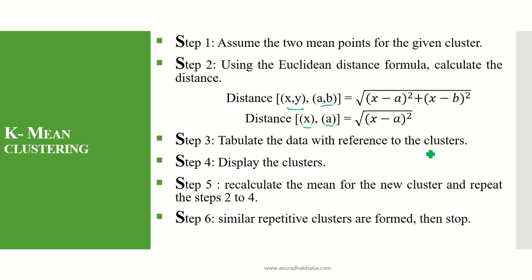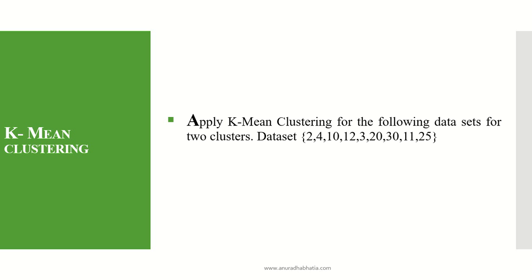Tabulate the data with reference to the clusters by finding the minimum value and display those clusters. Then recalculate the mean for the new cluster and repeat steps two to four. When similar repetitive clusters are formed and there is no movement of item sets between the clusters, we say these are the final clusters.